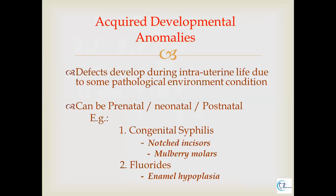The next category is acquired developmental anomaly, in which defects develop during intrauterine life because of some pathological condition, which could be trauma or infection during intrauterine life. These anomalies can be prenatal, neonatal, or postnatal. Diseases falling under this category include congenital syphilis and fluorosis.